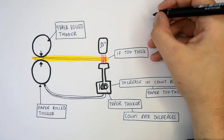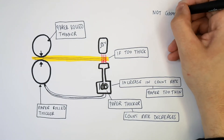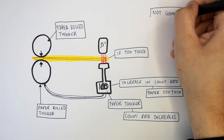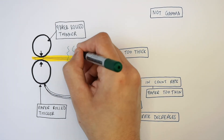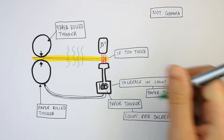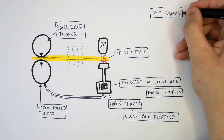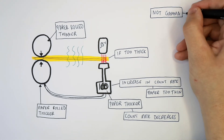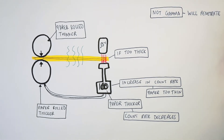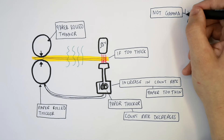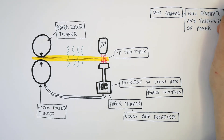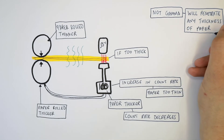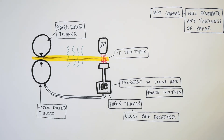So why is gamma radiation not used to measure the thickness of paper? This is because gamma radiation is extremely penetrating. No matter what the thickness of paper, the gamma radiation will penetrate any thickness, so you won't be able to determine whether the paper is too thick or too thin.